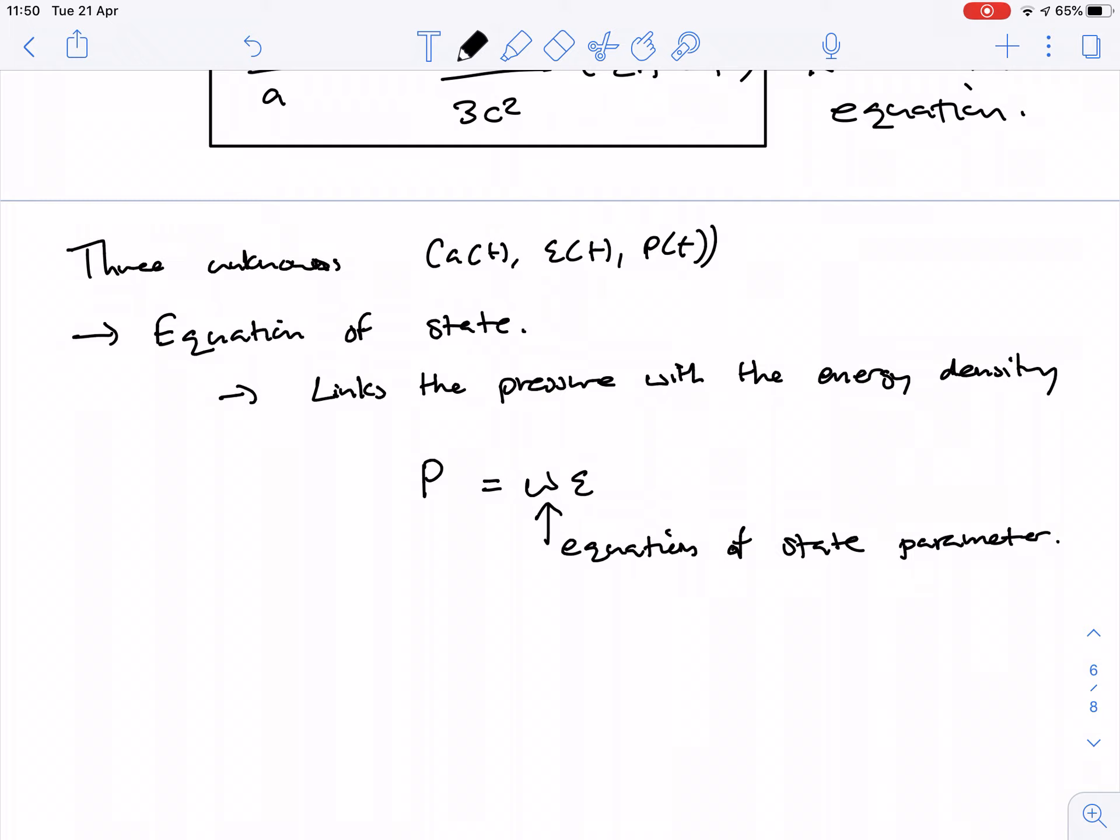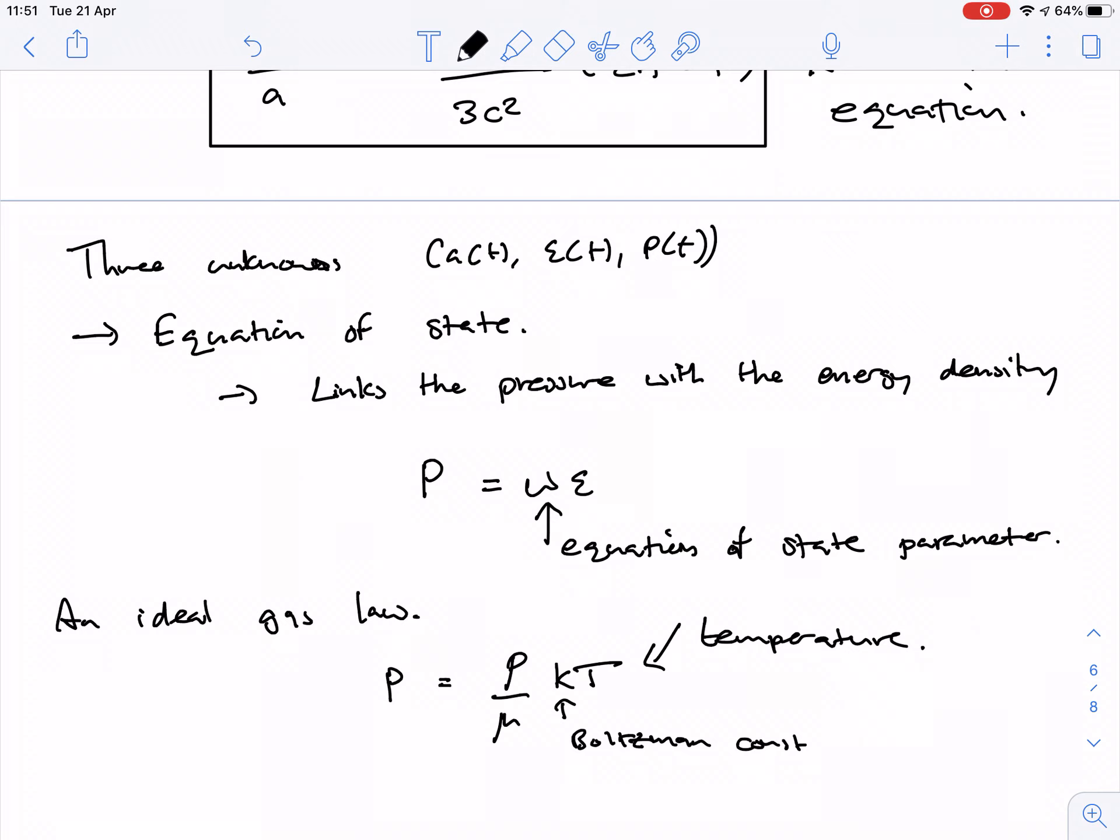You can think a little bit about it. Imagine an ideal gas. In an ideal gas, you can write the pressure is equal to density divided by the mean molecular mass times kt, where this is the Boltzmann constant. This is the temperature. So in other words, you have a gas, the pressure this exerts is just proportional to the temperature and the density. So that's what an ideal gas law looks like.